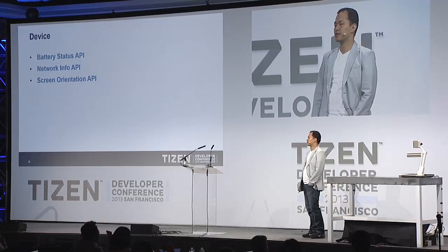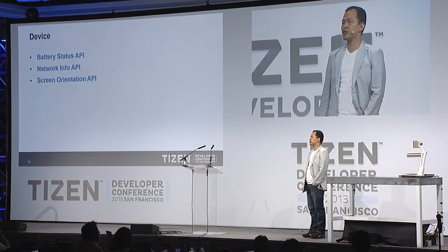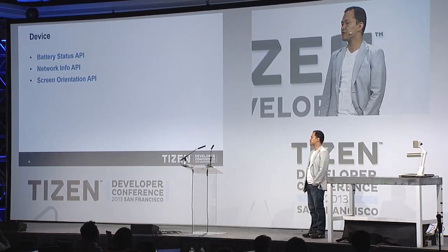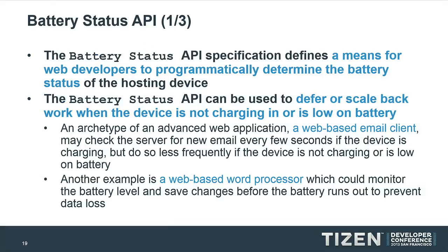How about APIs for devices? We added three items: a Battery Status API, a Network Information API, and Screen Orientation APIs.